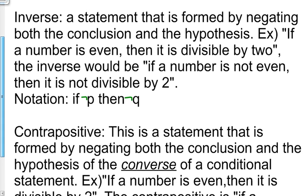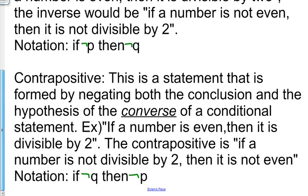The contrapositive is a statement that is formed by negating both the conclusion and the hypothesis of the converse of a conditional statement. For example, if a number is even then it is divisible by 2. The converse would be: if it is divisible by 2 then it is even. So the contrapositive is: if a number is not divisible by 2 then it is not even. The notation is: if not q then not p.